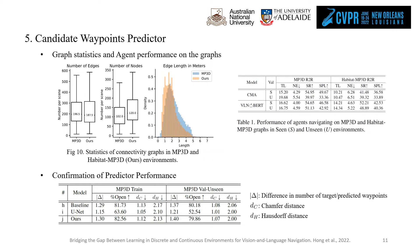We compare the statistics of the original connectivity graph and the adaptive graph, as well as the agent's performance over the two graphs, to confirm the quality of the adaptive graph in continuous environments. We also show that our transformer-based waypoint predictor can generate more accurate predictions compared to an MLP baseline and the unit applied in previous work.